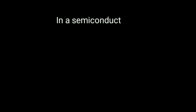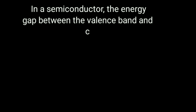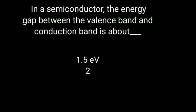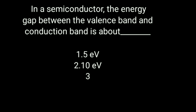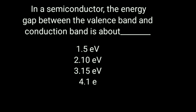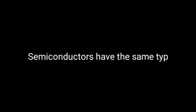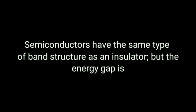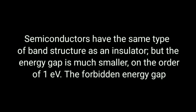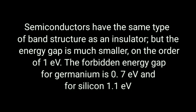Next question: In a semiconductor, the energy gap between the valence band and the conduction band is about — Option 1: 5 electron volt, Option 2: 10 electron volt, Option 3: 15 electron volt, Option 4: 1 electron volt. Answer is 1 electron volt. Semiconductors have the same band structure as an insulator, but the energy gap is much smaller, on the order of 1 electron volt. The forbidden energy gap for germanium is 0.7 eV and for silicon is 1.1 eV.